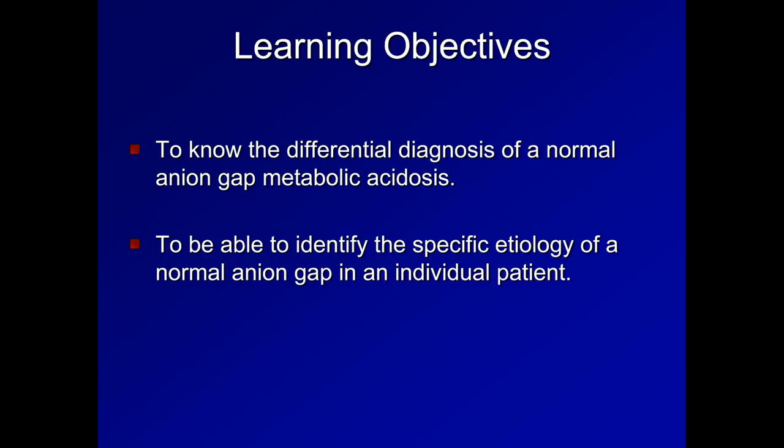Overall, I find the differential diagnosis of a normal anion gap metabolic acidosis is the most frustrating of the five major categories of acid-base disorders. It feels just a little more random and less clinically relevant than the other categories, which is really just a manifestation of the fact that these problems, on average, are less acutely important than the pathologies that cause the other disorders. It's also because the renal tubular acidoses in particular are complicated, incompletely understood, and hard to remember. But I will try to keep things as simple as possible.